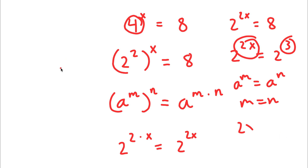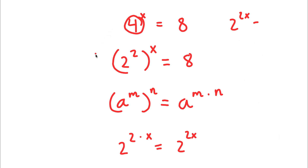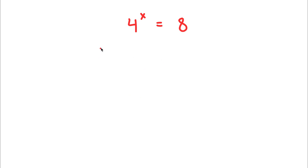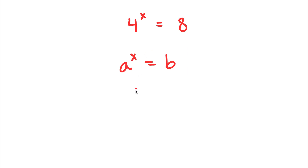Now I actually have a second method of solving this problem. So again, I have 4 to the power of x equals 8. If I have something in the form a to the power of x is equal to b, then x is actually equal to log base a of b.